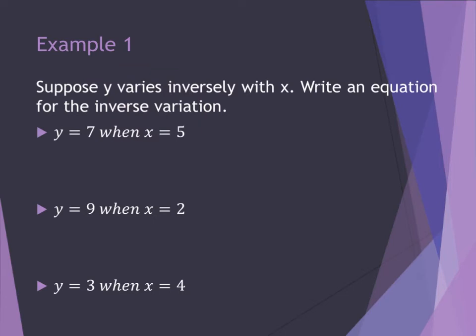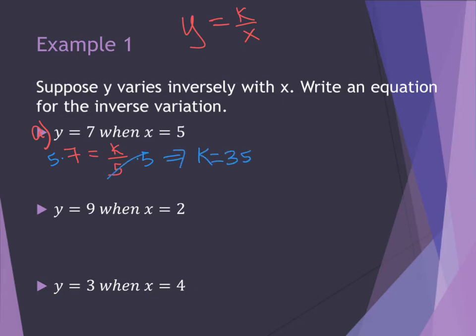The examples are going to be similar to those of direct variation, except we're going to use the inverse variation equation. For example 1, it tells us that y varies inversely with x, so I know that y equals k divided by x. For part A, I'm going to plug in 7 for my y, and I know that x equals 5. In order to get k by itself, I multiply both sides by 5, so k is equal to 35. My final equation is y equals 35 divided by x.